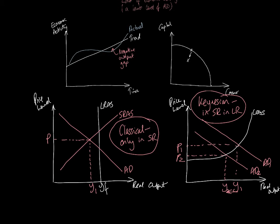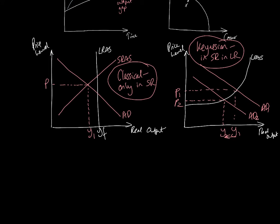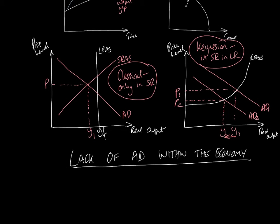The main common thread through all these models is that cyclical unemployment occurs because of a lack of aggregate demand within the economy. Because labour is what we refer to as derived demand, if there is a lack of aggregate demand, that means there will also be a lack of demand for labour, as firms will have less need for labour to produce output.